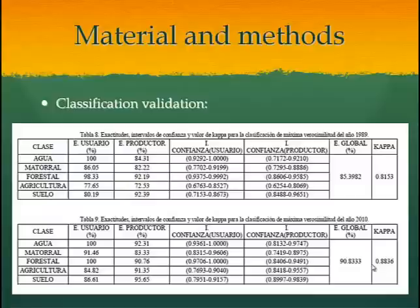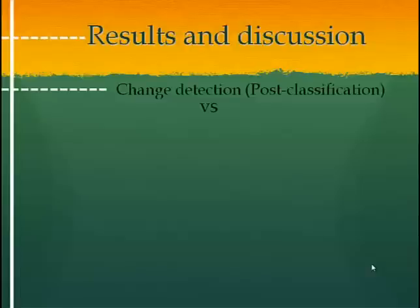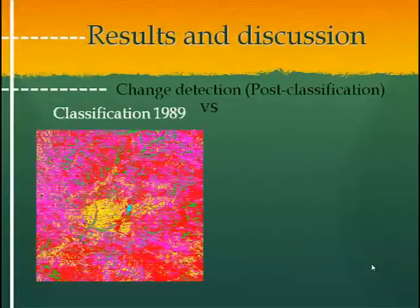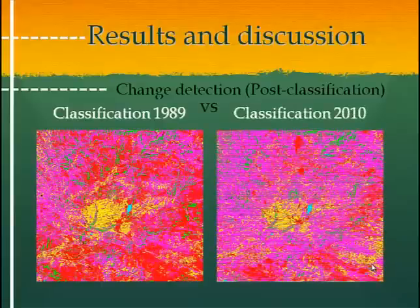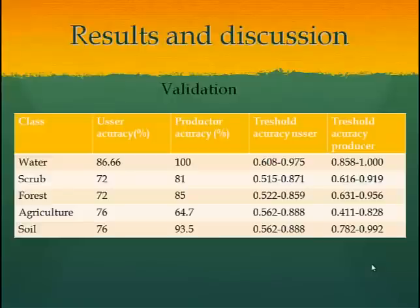Change detection. We chose the post-classification algorithm for change detection. It works by subtracting information from one image to the other. The next step was to validate the change detection, and so we obtained the different accuracies and Kappa values.